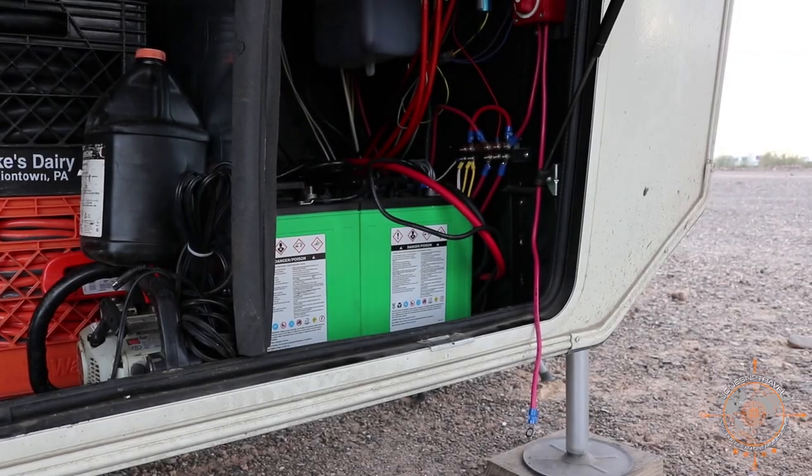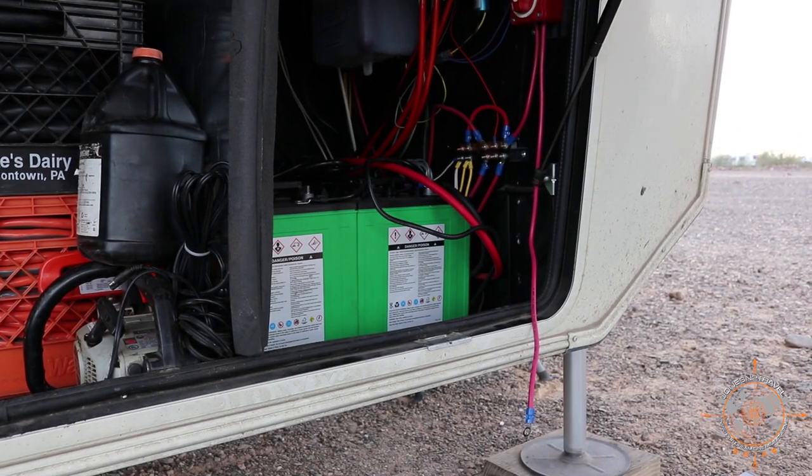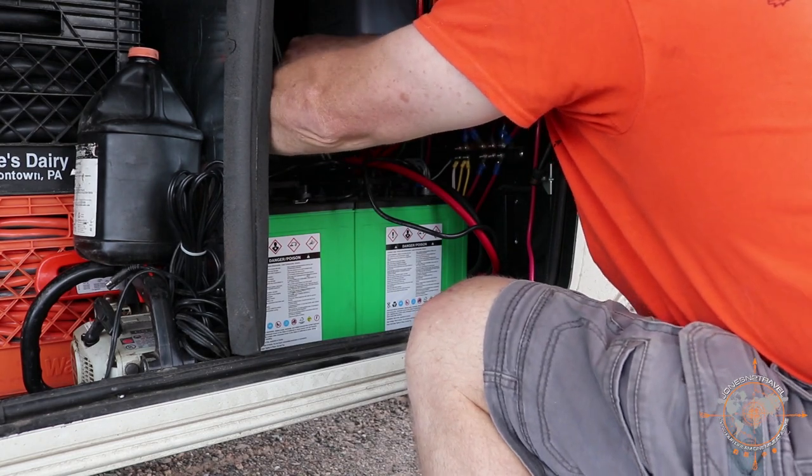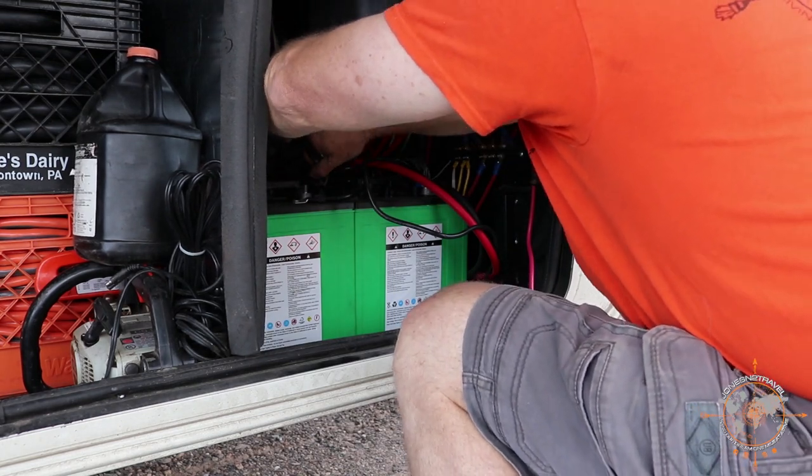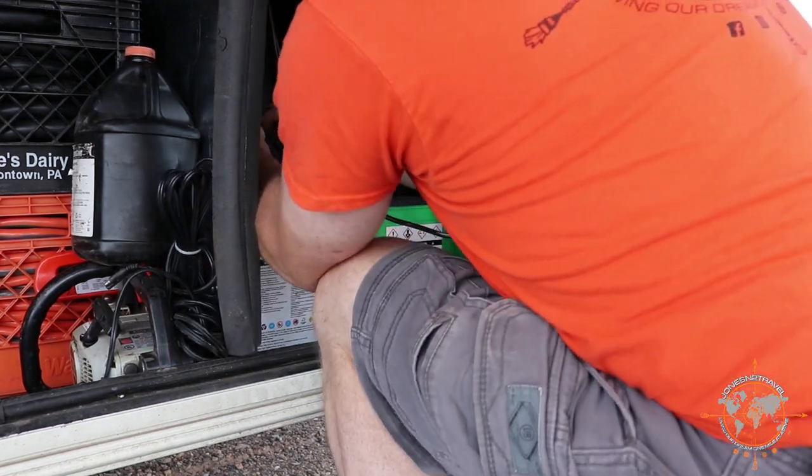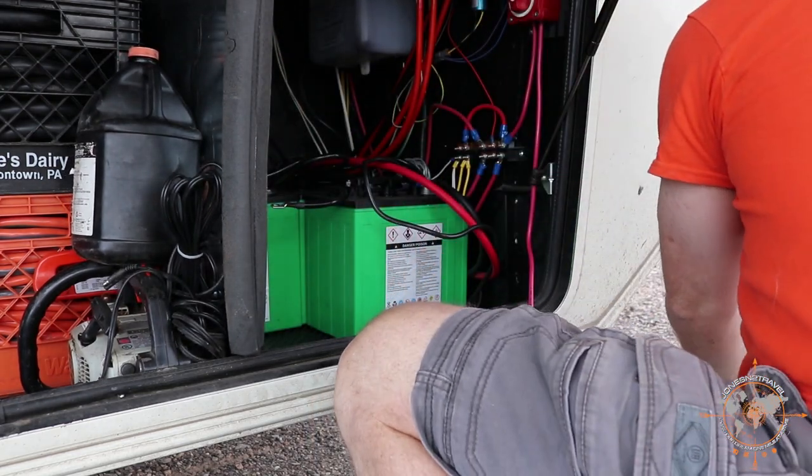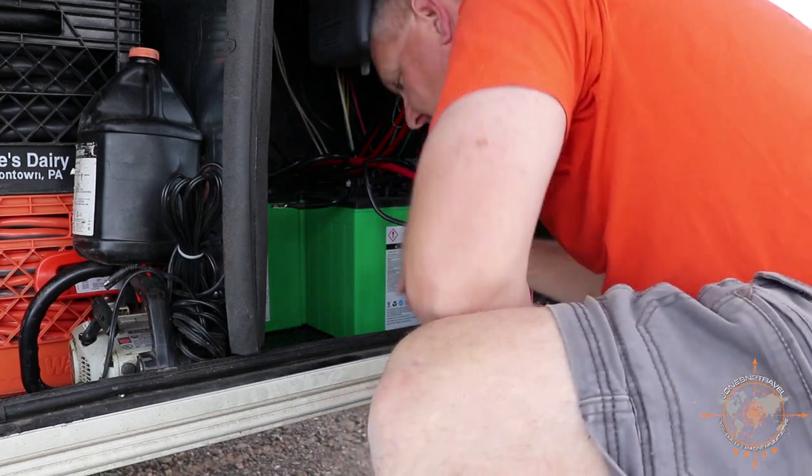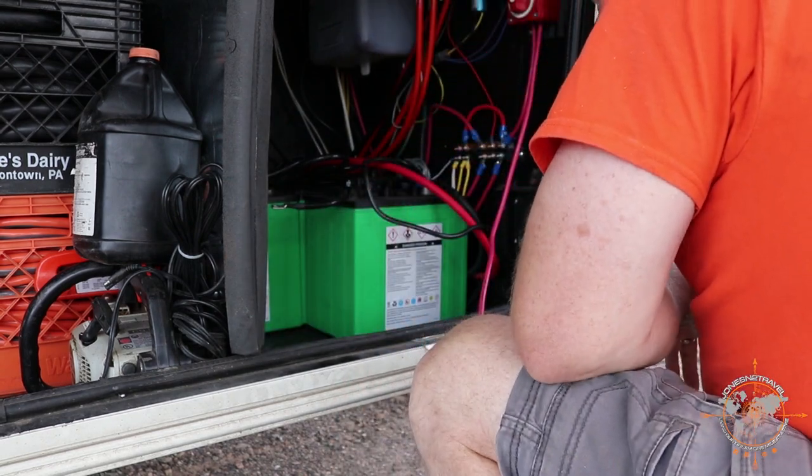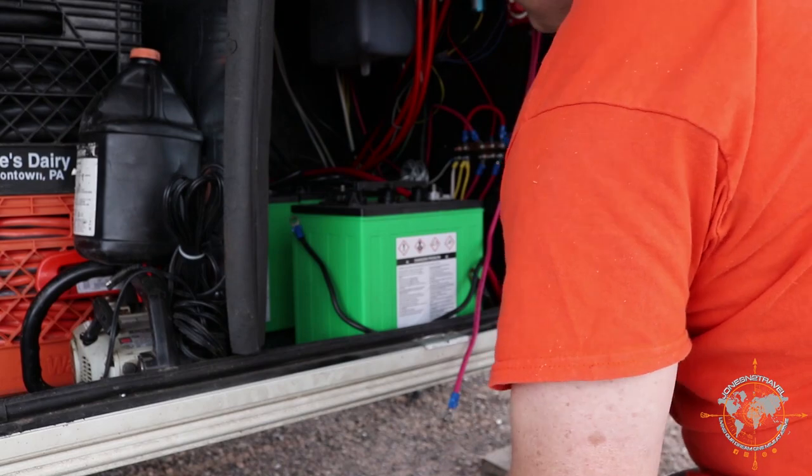All right, we were able to get the battery monitor installed inside the coach and now it's time to clean up this battery bay. We're going to remove all four batteries, install the battery box just for a little added security, and then we'll hook up the solar charge controller and the shunt in order to properly work with the battery monitor.